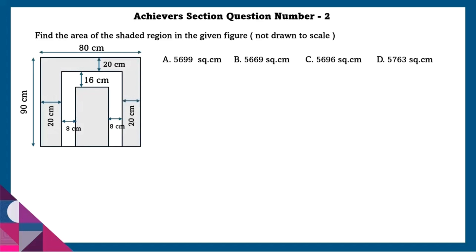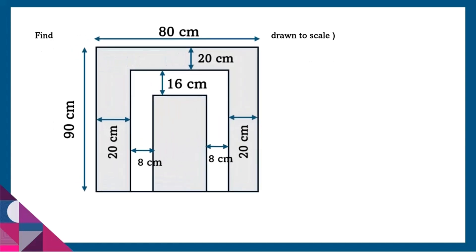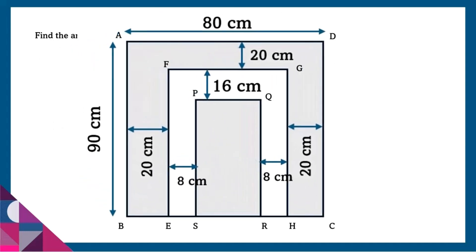Achieve section question number 2: Find the area of the shaded region in the given figure not drawn to scale. They have asked to find the area of the shaded region. As we can see, in the whole figure there is a little part which is not shaded. So in order to find the total area of the shaded part, we need to subtract this unshaded part from the total area.